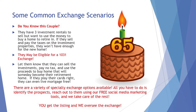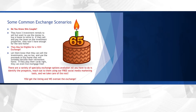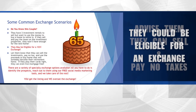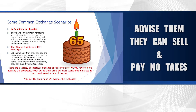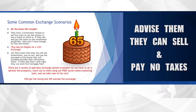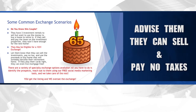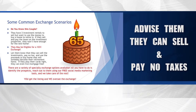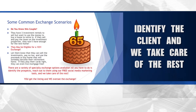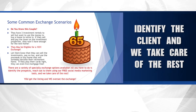As another scenario, how about this couple? They have three investment rentals to sell, but they want to use the money to buy a home to retire in. If they sell and pay the taxes on the investment properties, they won't have enough to buy the home they really want. They may be eligible for a 1031 exchange. If you let them know they can sell their investments and pay no tax through an exchange, they can use the proceeds to buy a home that will someday become their retirement home. And if they play their cards right, they can even live mortgage-free. We can tell them all the rules of how to get it done — you just need to identify the couple so you can offer them a turnkey solution.